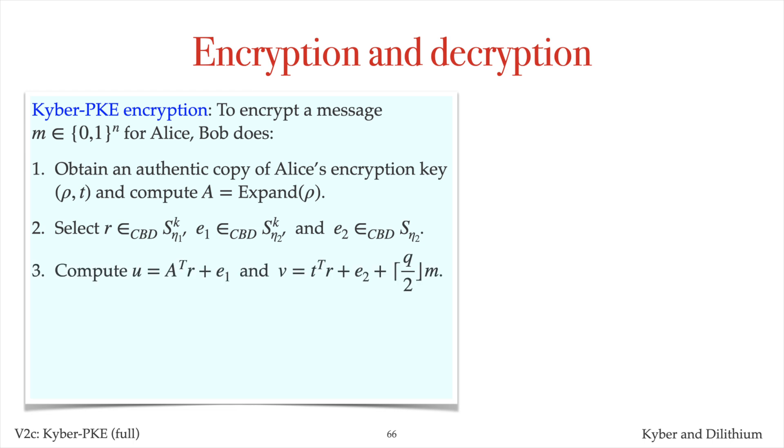Bob computes U and V, and then compresses U to C1 and V to C2. The ciphertext is C, comprised of C1 and C2.